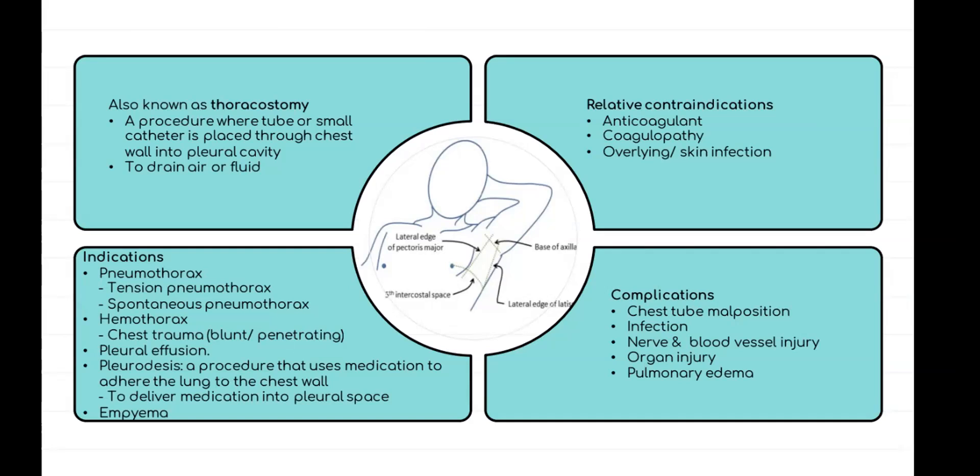For contraindications, chest tube insertion is relatively contraindicated in patients with anti-coagulant coagulopathy where the INR is more than 1.5, or with a platelet count less than 50,000, and in patients with overlying skin infection. It is absolutely contraindicated if there is lack of informed consent or patient cooperation.